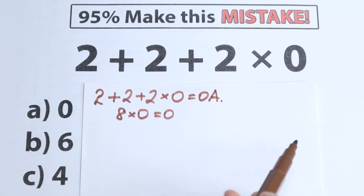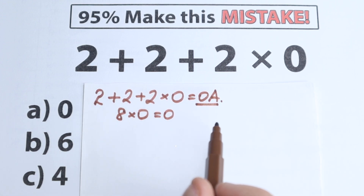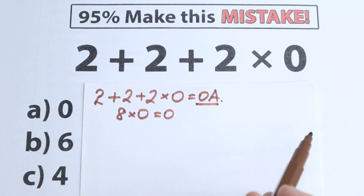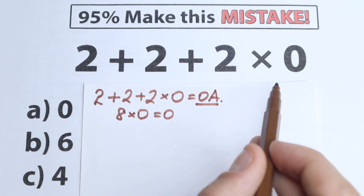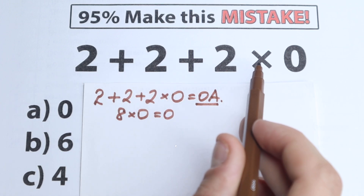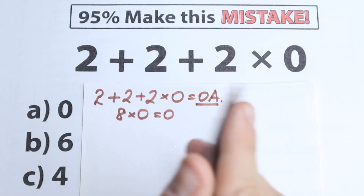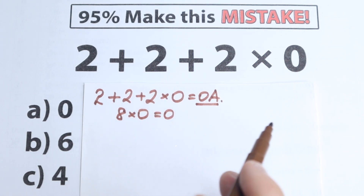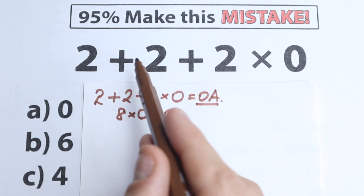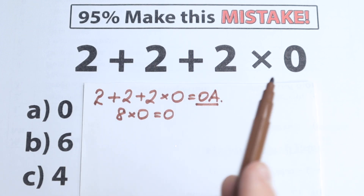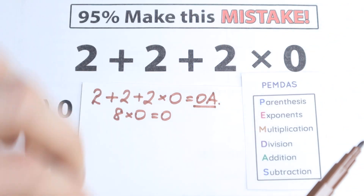I don't want to say right away whether that is correct or incorrect. I want you to understand that we need to know about the correct order of operations. We don't have all addition or all multiplication here — we have addition and multiplication, so this is a mix of operations. We need to know what we need to start with: addition or multiplication.